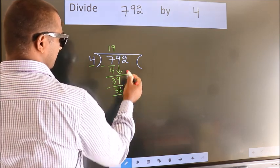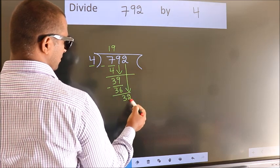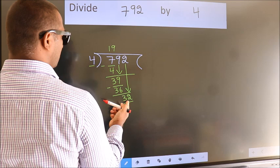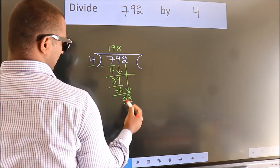After this, bring down the beside number. So 2 down. So 32. When do we get 32? In 4 table, 4 8 is 32.